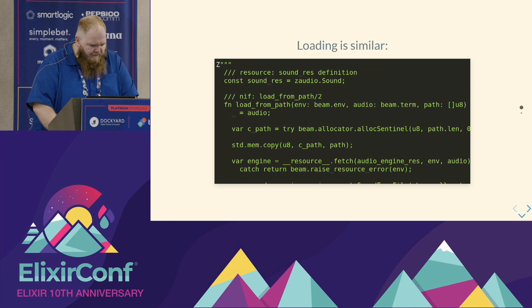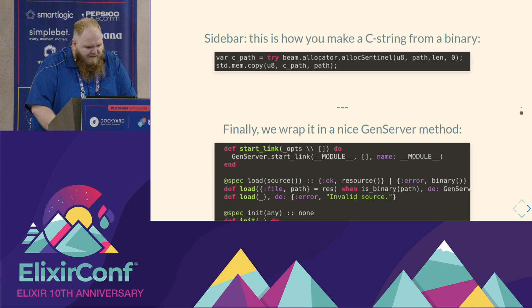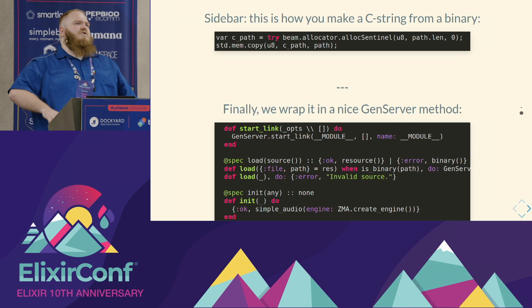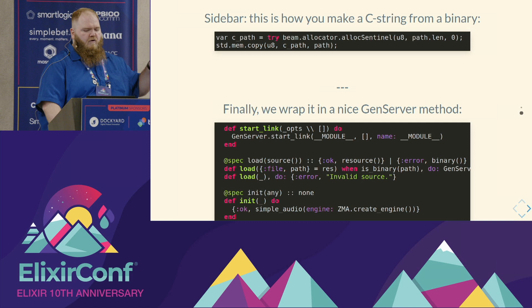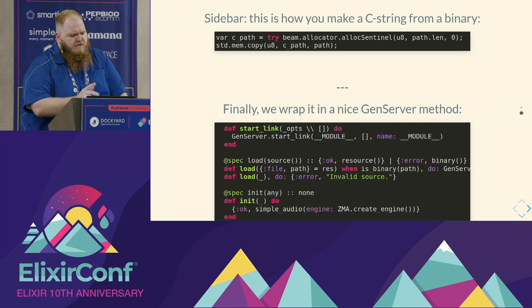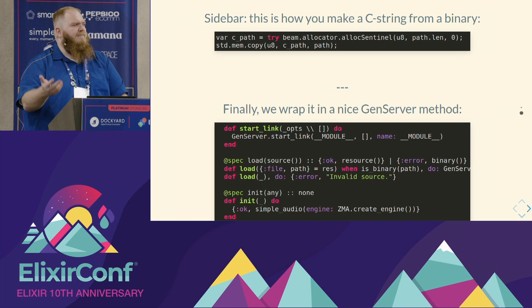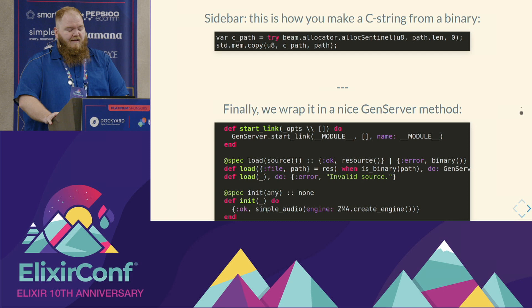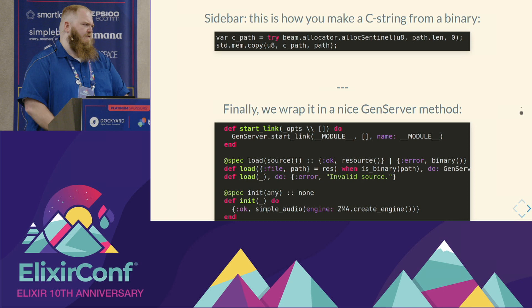The load function is very similar. The interesting part is this incantation: var cpath = try beam.allocator.dupeZ — which is how you take a binary in Elixir and turn it into a null-terminated string for consumption by C APIs. That's a bit of a head-scratcher. You get that through beam_allocator.dupeZ — where the Z means null-terminated. There is an impedance mismatch between binaries in Elixir and null-terminated strings in C, so if somebody creates a binary with nulls in it and hands it to this API, good luck. That's a polish point for future versions of Ziggler.